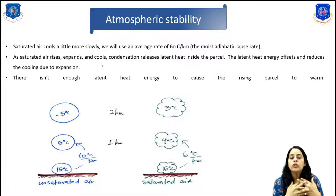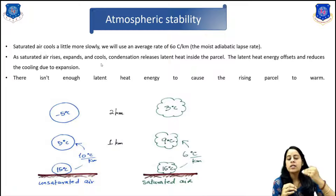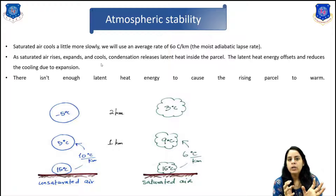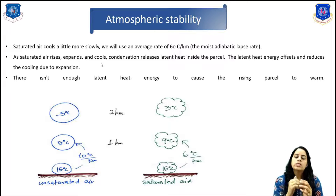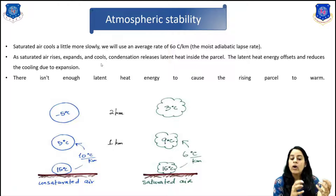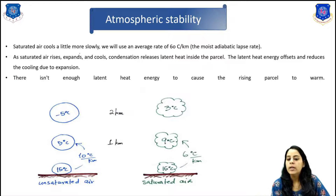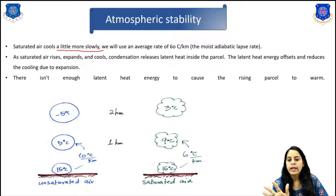We need a little more information to perform this test. First, we need to know how quickly a rising parcel of air will cool. Unsaturated air, with relative humidity less than 100%, always cools at the rate of 10 degrees Celsius per kilometer. This is known as the dry adiabatic lapse rate. The term 'lapse rate' means the rate of decrease with increase in altitude. 'Adiabatic' means no heat is being exchanged between the air inside and outside the parcel.